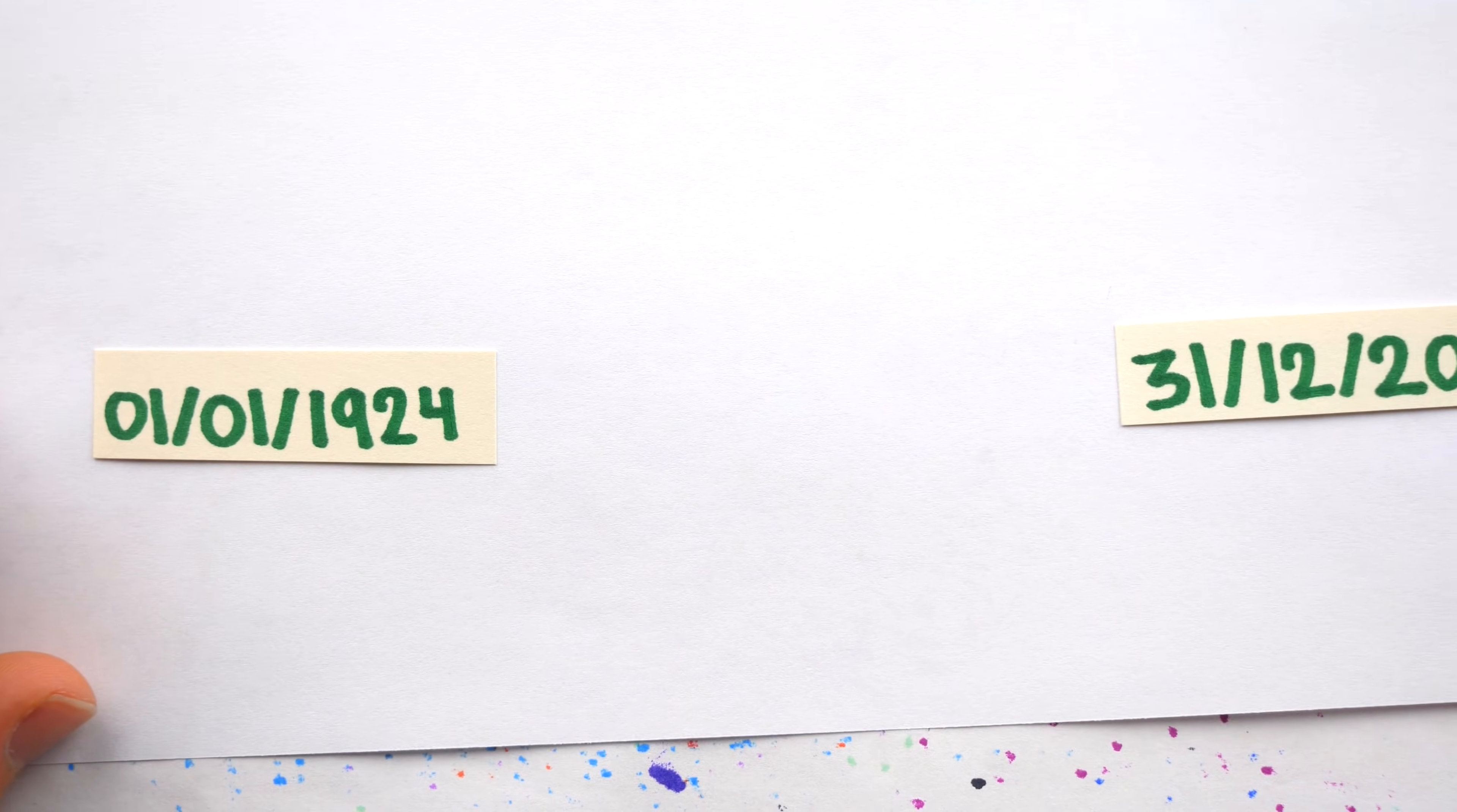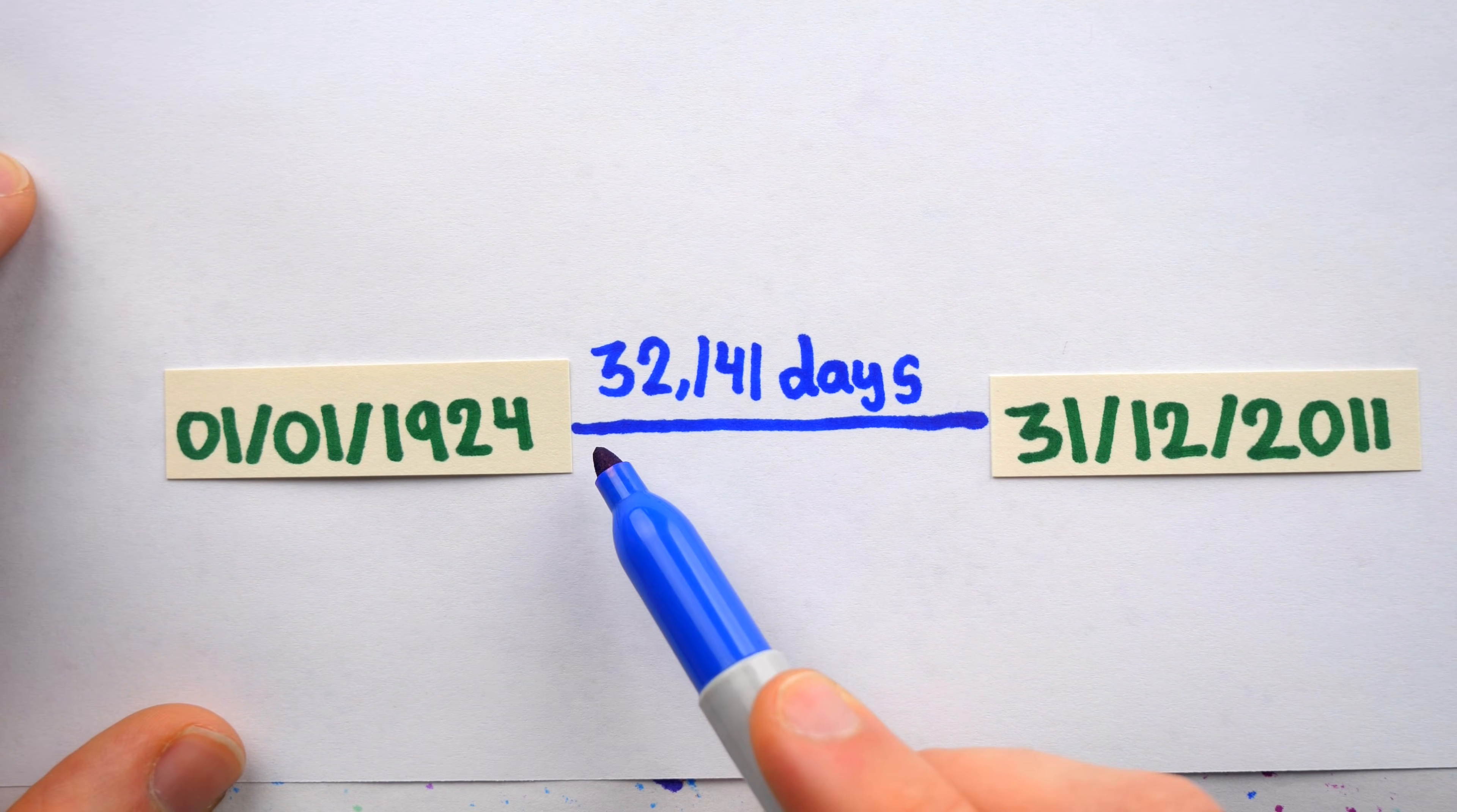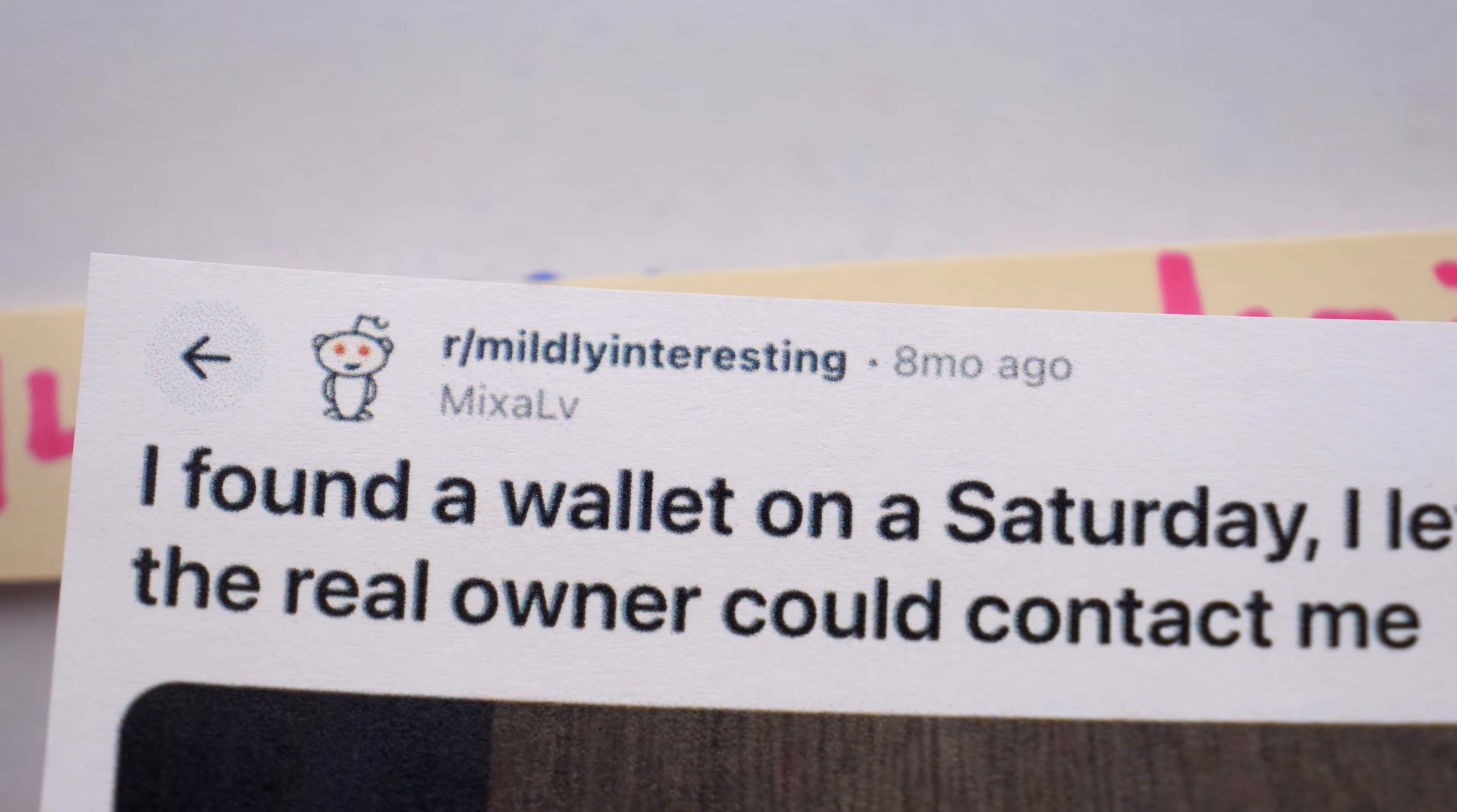Now we can revise our security calculation. Between Tuesday the 1st of January 1924 and Saturday the 31st of December 2011, there are only 32,141 days. One of those days has got to be the correct one to put in here and find OP's phone number. So if you were able to call one number every 20 seconds, you could find the right number in just over a week. Are you sweating yet, Mixa LV?